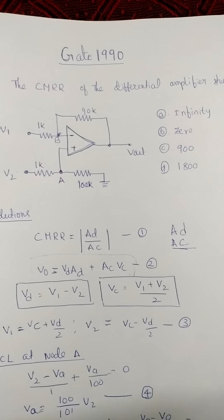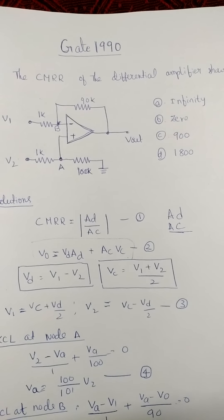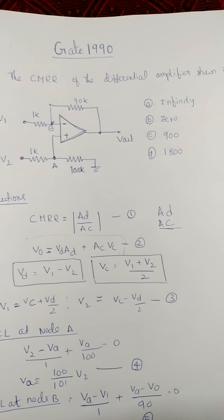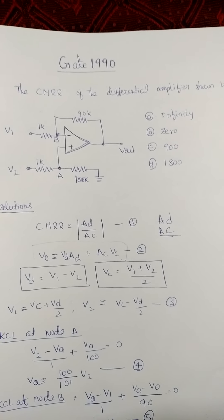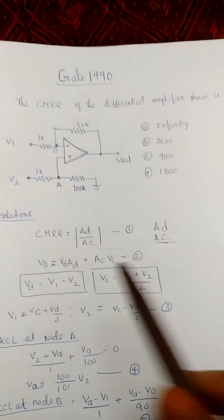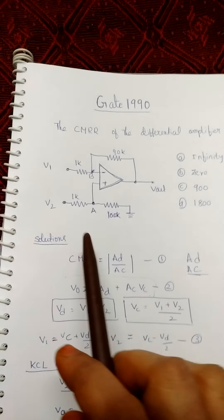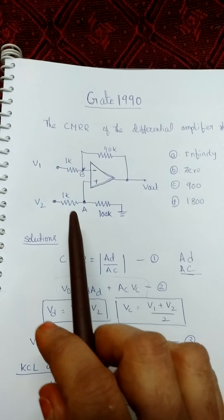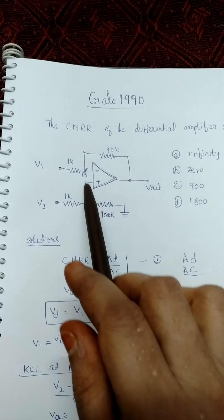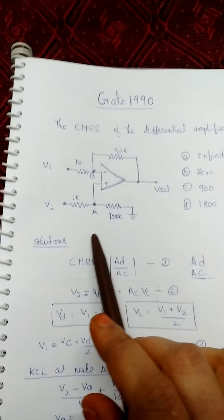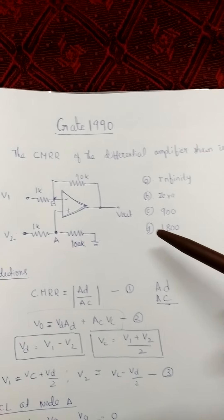Hello, this is a GATE question from 1990 related to analog electronics. The topic is operational amplifier. The question asks about the common mode rejection ratio of a differential amplifier as shown in the figure. This is the operational amplifier with two inputs: inverting input V1 and non-inverting input V2. The operational amplifier is connected in a feedback loop with different resistors. From the given problem, we need to find the CMRR.